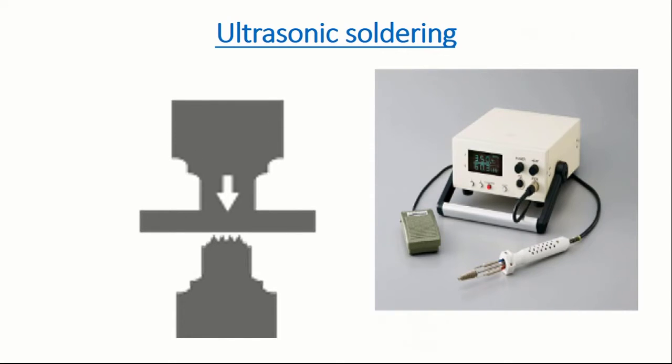The tip of the soldering iron melts solder on aluminum and ultrasonic vibrator removes the aluminum oxide layer. The solder thus gets fastened to clear metal without any difficulty.